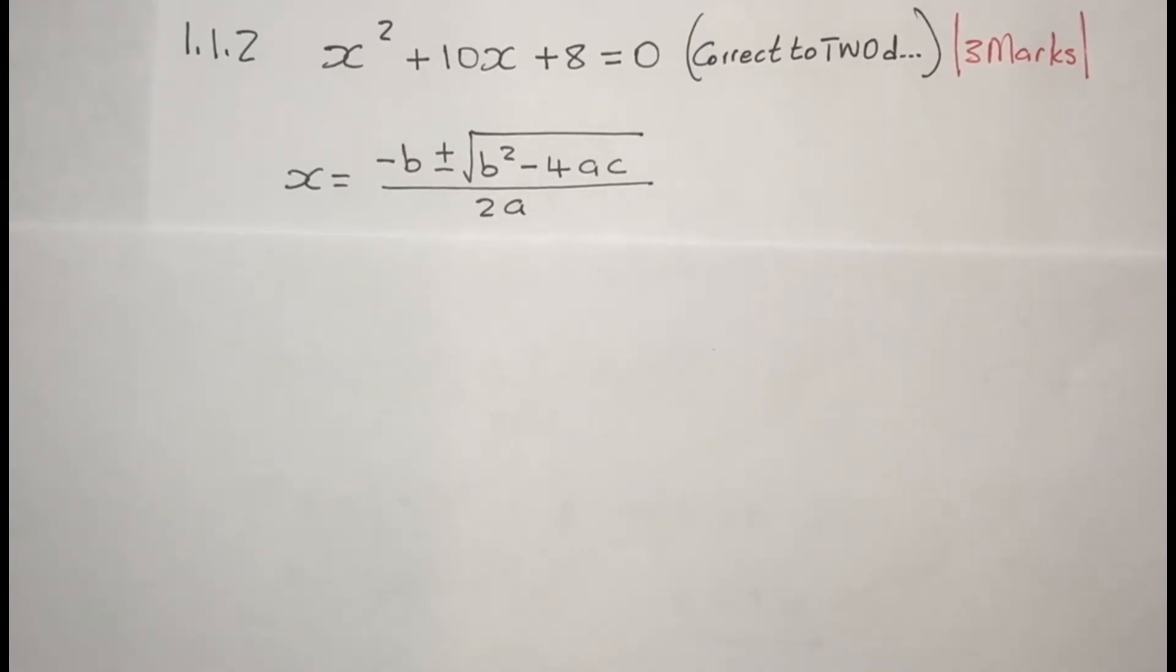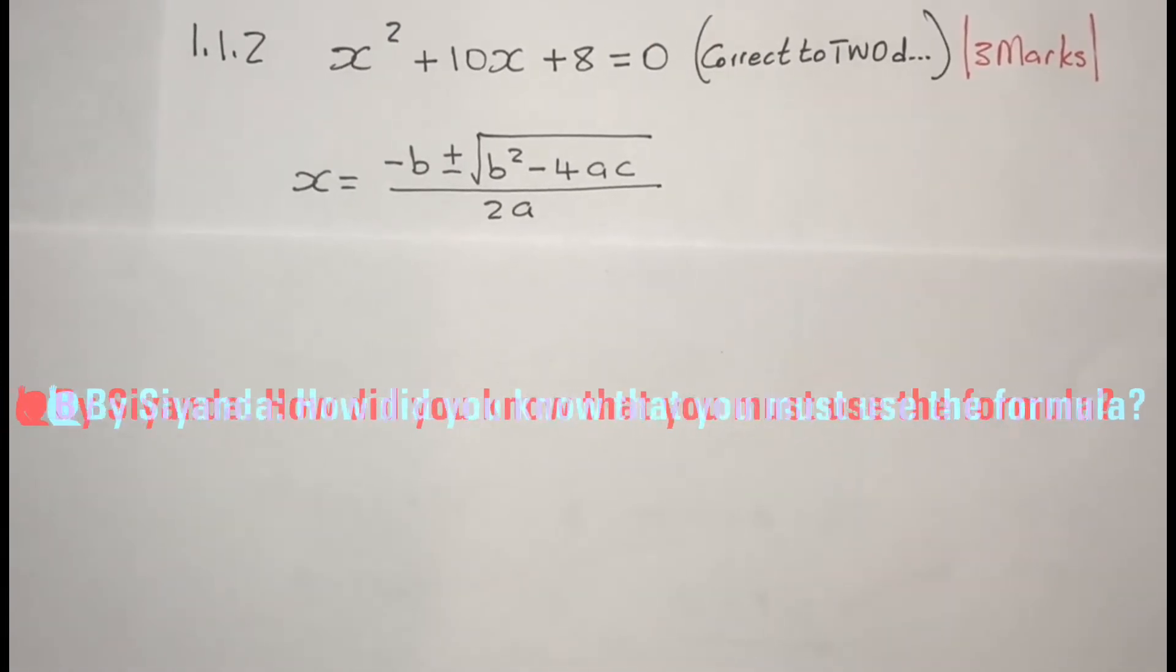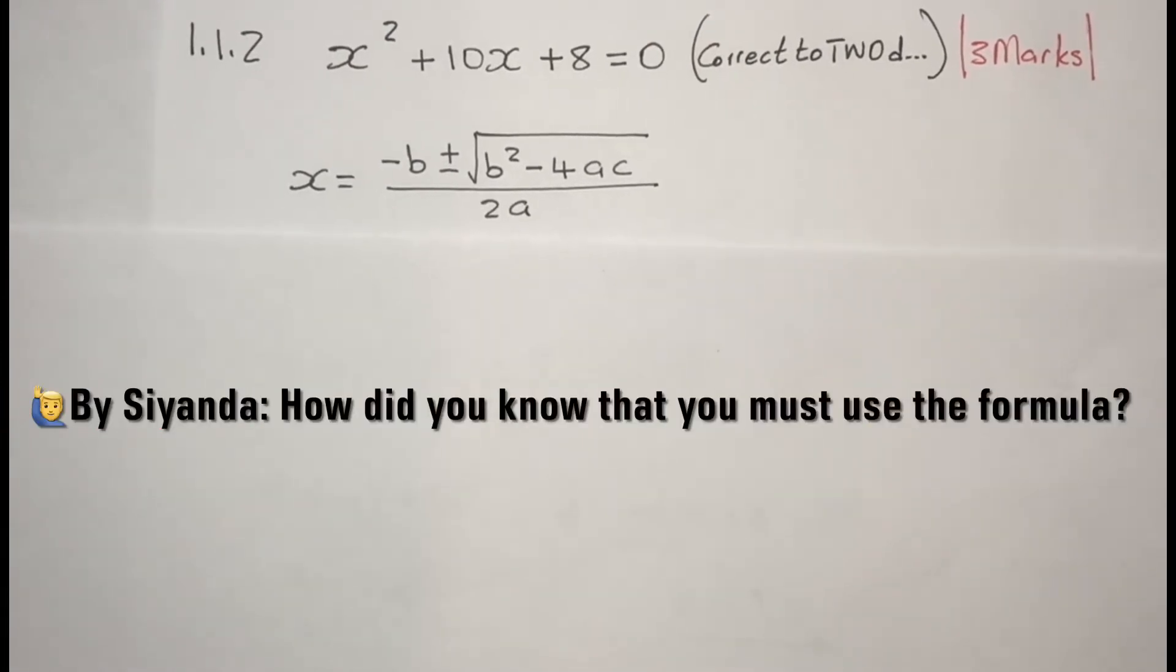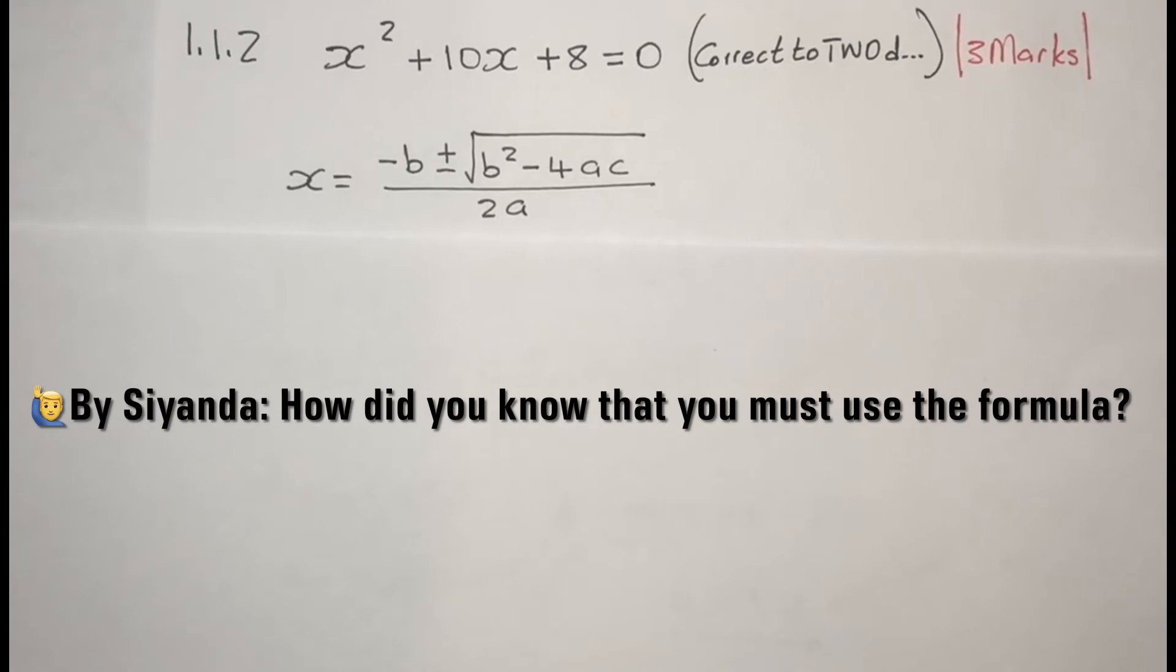Next step, you write down the quadratic equation: x equals minus b plus or minus square root of b squared minus 4ac, all over 2a.